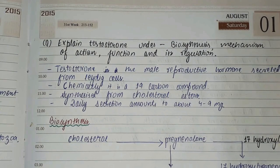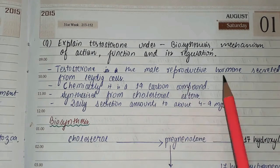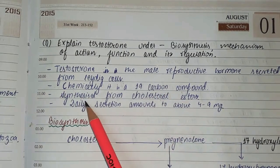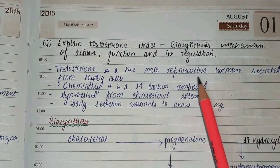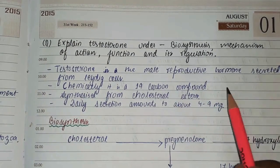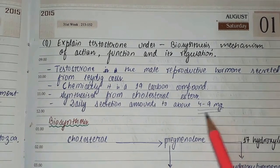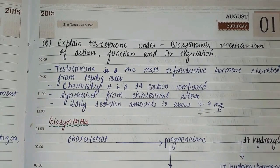They won't ask a layman question like 'define testosterone,' but you need to mention it briefly. Testosterone is the male reproductive hormone secreted from the Leydig cell. Chemically it is a 19-carbon compound, synthesized from cholesterol esters. It has a hydroxyl group at the 17th position of the carbon chain, and its daily secretion amounts to about 4 to 9 milligrams per day.